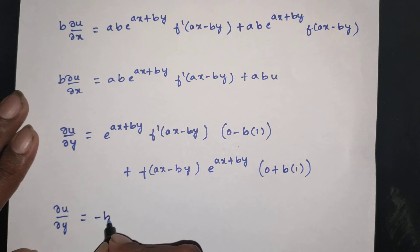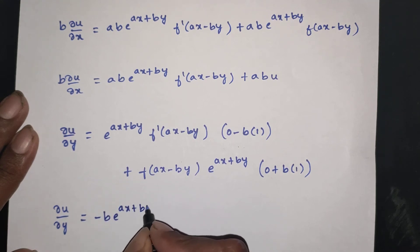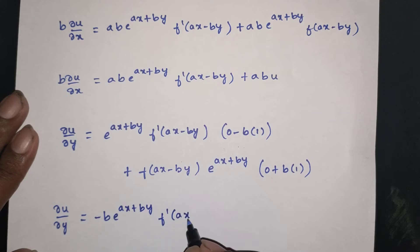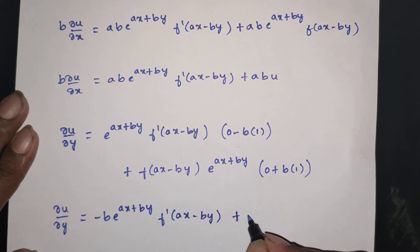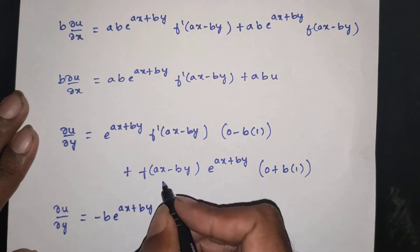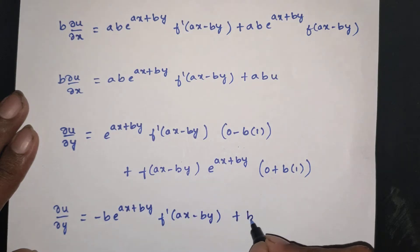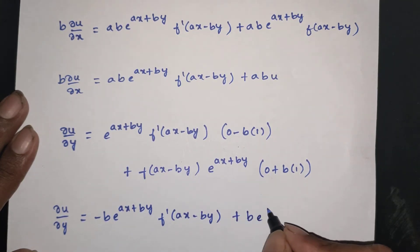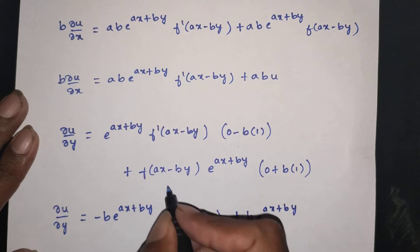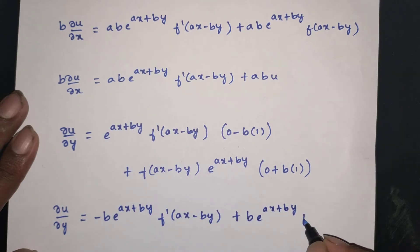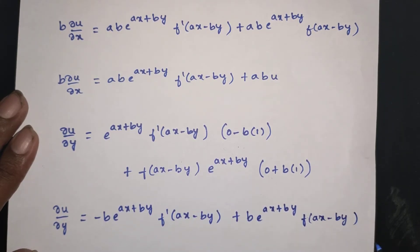Therefore ∂u/∂y equals minus b·e power ax plus by, f dash of ax minus by, plus b·e power ax plus by, f of ax minus by.